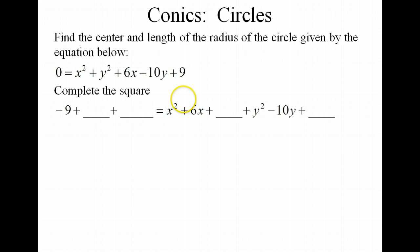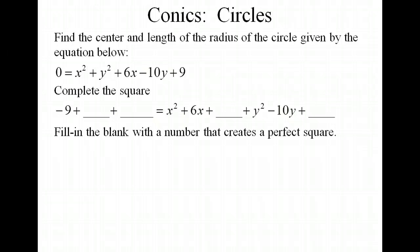So when you're completing this square, you want to take half of the coefficient of x and square it. For the x terms, that number is 6. So we want to take half of 6 and square it. And that's going to give us 9 that we're going to put here. And we're going to do the same thing for the -10. So we have half of -10 squared is going to give us positive 25. So we add the 9 and the 25 to both sides of the equation.